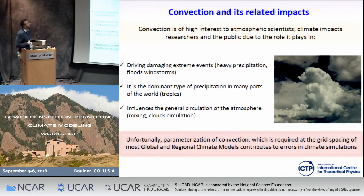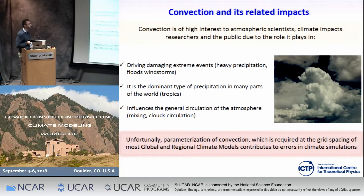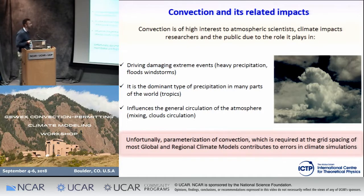Firstly, an introduction about the importance of convection. Convection is of high interest for atmospheric scientists, climate impacts researchers, and for the public in general, due to the role it plays in driving damaging extreme events. It's also the dominant type of precipitation in many parts of the world and influences the general circulation of the atmosphere. Unfortunately, this important phenomenon is parameterized at the grid spacing of most global and regional climate models, and it's well known that it's one of the main sources of error for climate projection.